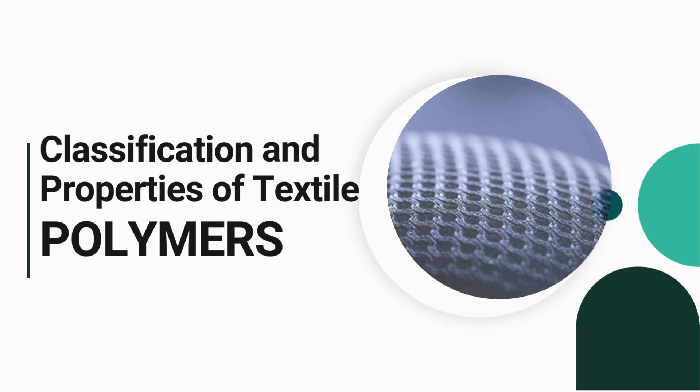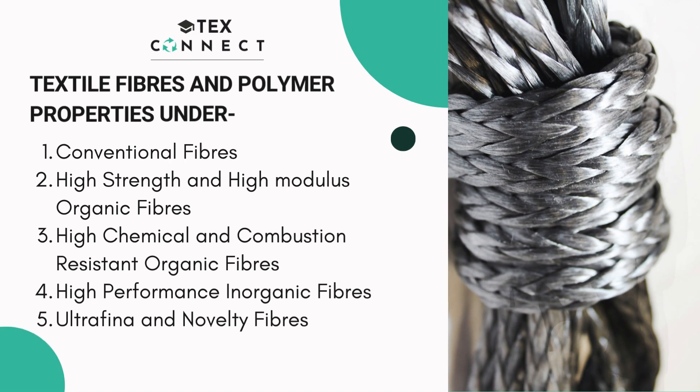We will be learning about textile fibers and their polymer properties, which fall under these five categories: number one, conventional fibers; number two, high strength and high modulus organic fibers; number three, high chemical and combustion resistant organic fibers; number four, high performance inorganic fibers; and number five, ultrafine and novelty fibers.